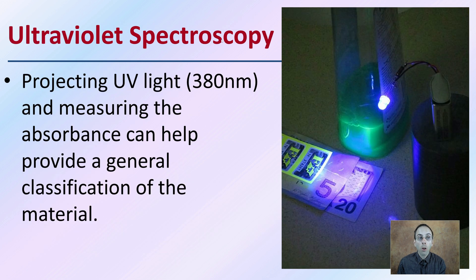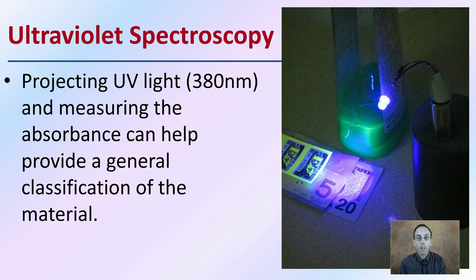Ultraviolet spectrometry involves projecting ultraviolet light — at around 380 nanometers wavelength — onto the material. Measuring the absorbance can help provide a general classification, as some materials react more to UV light than others. It's also an easy light source to use and project in a laboratory setting.